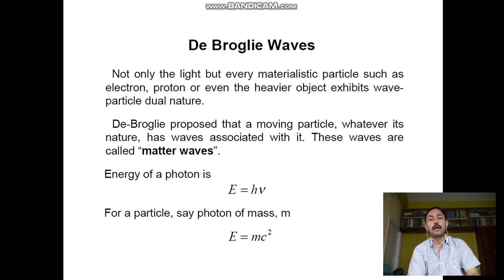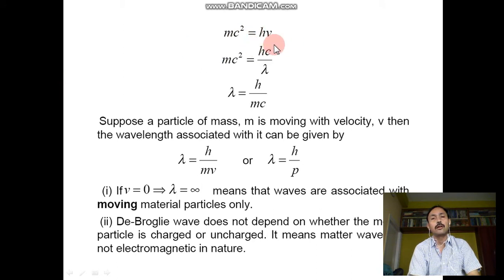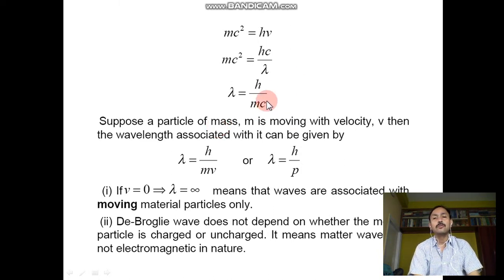The energy of the photon is E = hν, where h is Planck's constant (6.64 × 10⁻³⁴ J·s) and ν is the frequency of radiation. For a photon of mass m, energy becomes E = mc² per Einstein's mass-energy relation. So mc² = hν, and since ν = c/λ, cancelling c gives λ = h/mc. For a particle of mass m moving with velocity v, the associated wavelength is λ = h/mv, or λ = h/p.